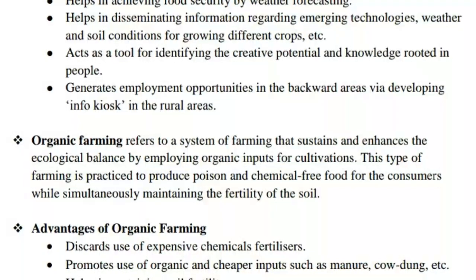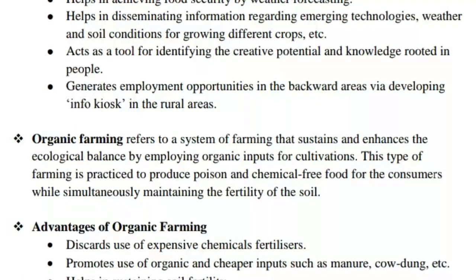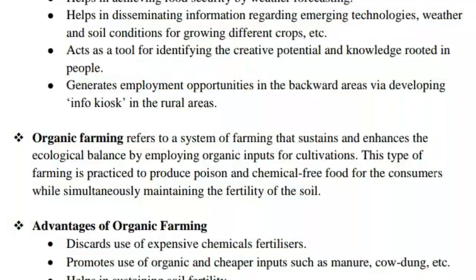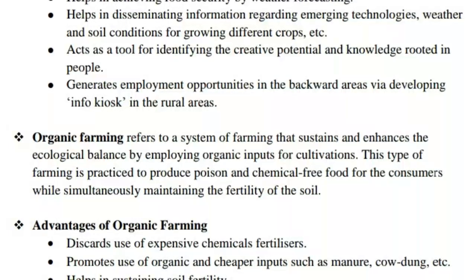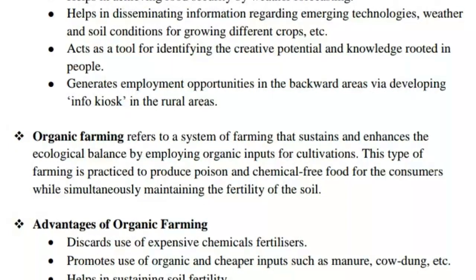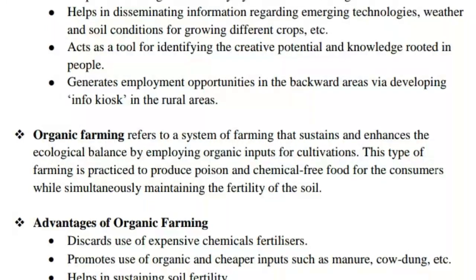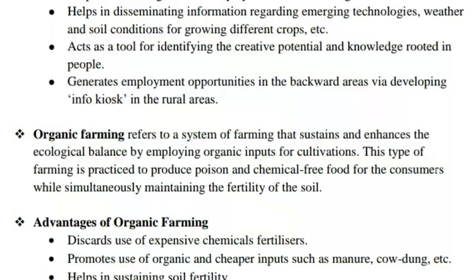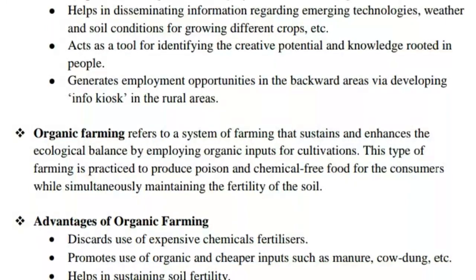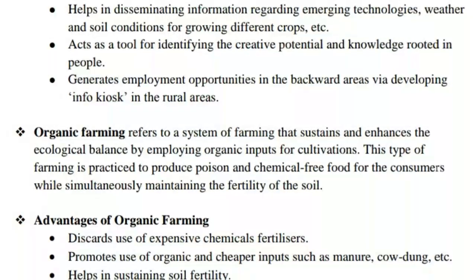Organic farming refers to a system of farming that sustains and enhances ecological balance by employing organic inputs for cultivation. This type of farming is practiced to produce poison- and chemical-free food for consumers while simultaneously maintaining the fertility of the soil.